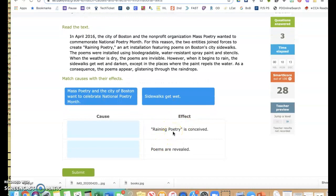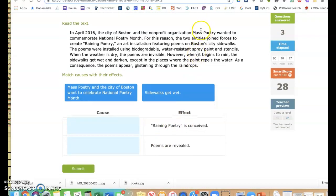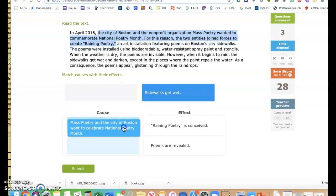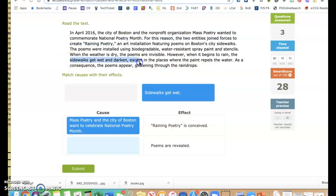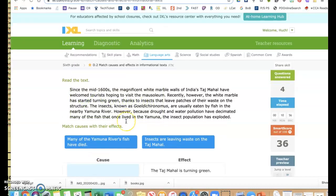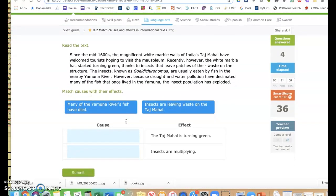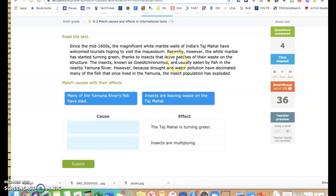So, the effect was Raining Poetry is conceived. Mass Poetry wanted to commemorate National Poetry Month. For this reason, the city of Boston and the non-profit organization Mass Poetry wanted to commemorate National Poetry Month. For this reason, the two entities joined forces to create Raining Poetry. So this one matches that. Poems are revealed when the sidewalks get wet and darkened. So that checks out. There we go. Hopefully you're kind of seeing how I do this. Hopefully you're noticing that even when I'm pretty sure I'm correct, I still go back and check. Just because it's easier to just check than to worry about if I'm right or wrong.